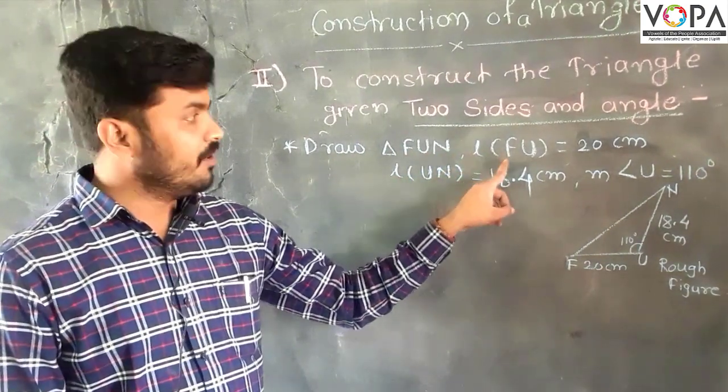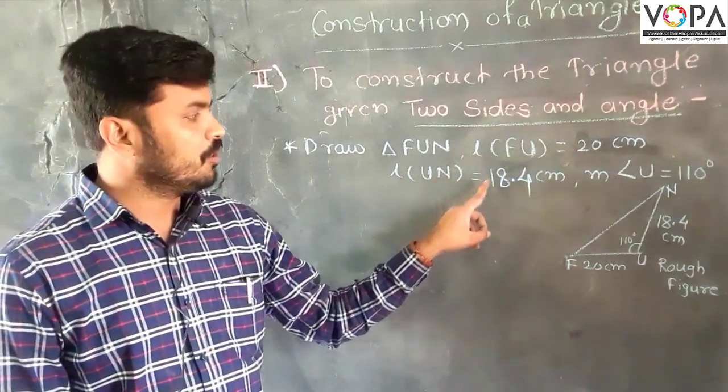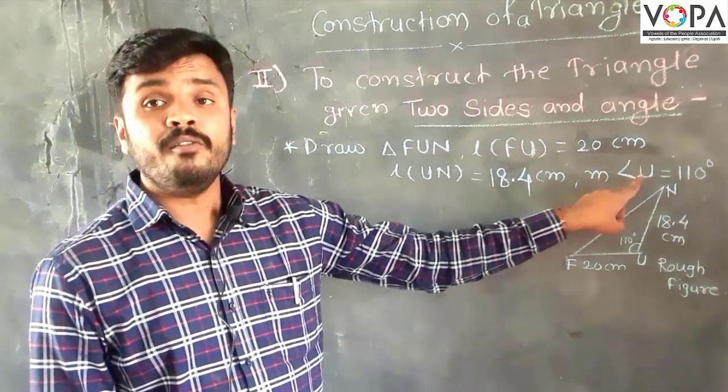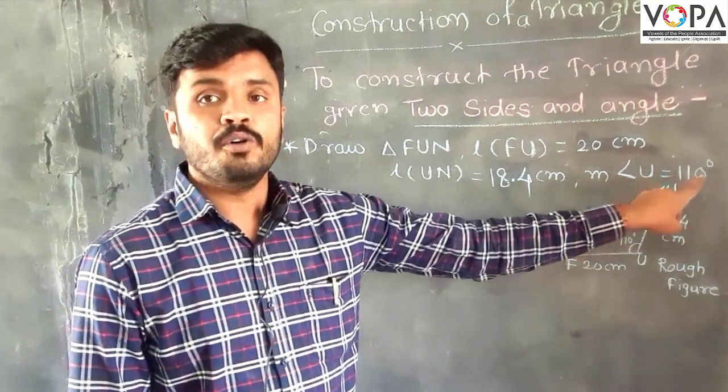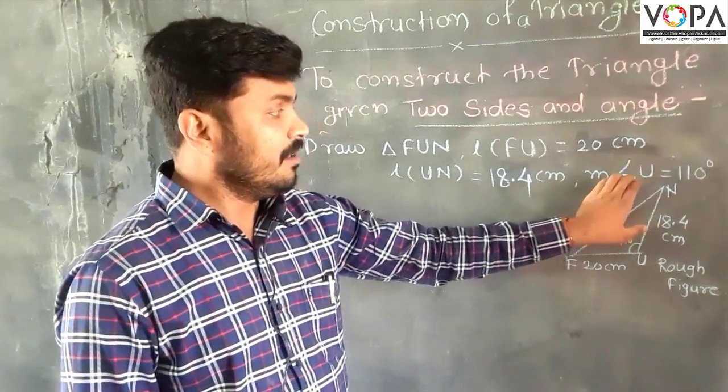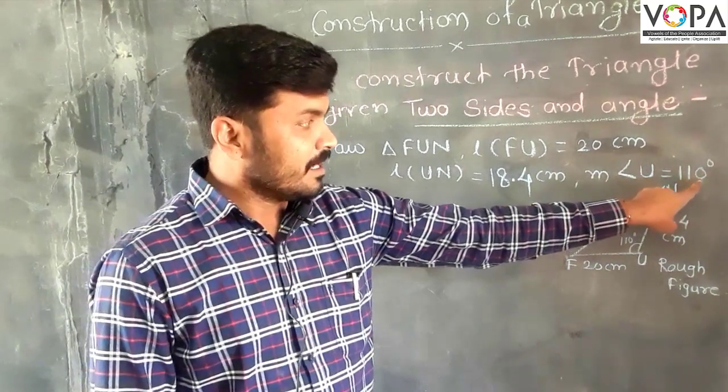In triangle FUN, the length of FU is equal to 20 centimeters, length of UN is equal to 18.4 centimeters, and the measurement of angle U is equal to 110 degrees.